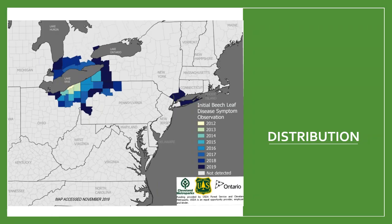Here's a distribution map showing the current known locations of beech leaf disease, which includes Ohio, Pennsylvania, New York, Connecticut, and Ontario, Canada. In total, this disease spans 41 counties. Although this might seem small and isolated, you can see it has been spreading at a pretty consistent rate since its first detection in 2012. The southeastern section of New York and the southwestern part of Connecticut have more recent 2019 observations.